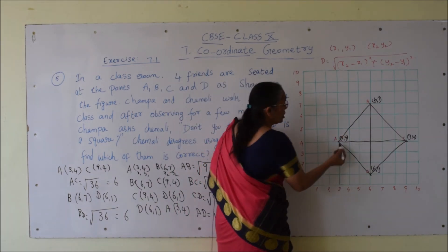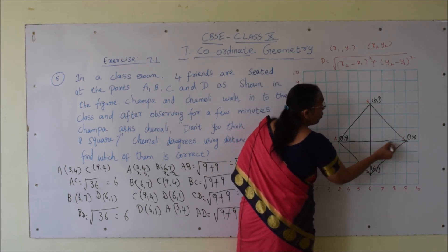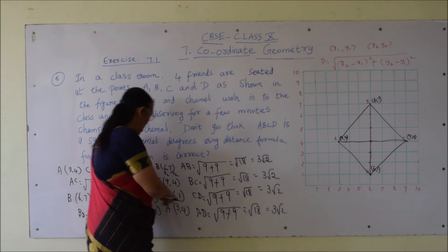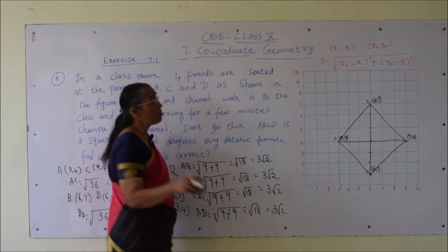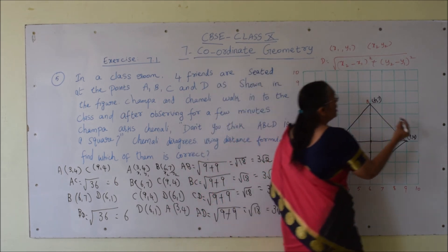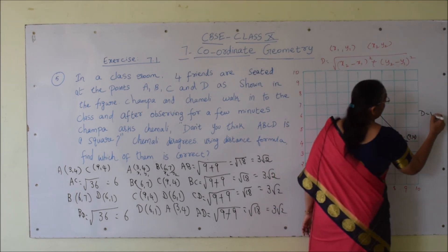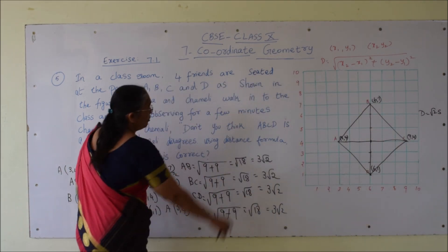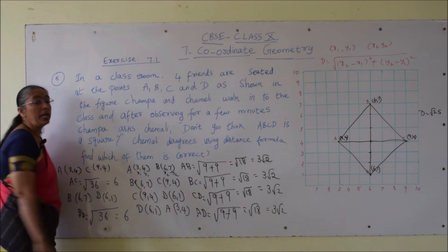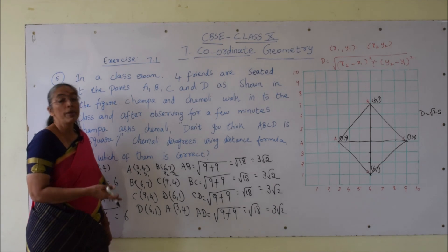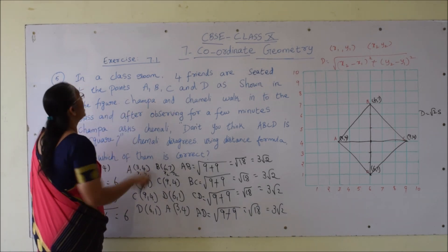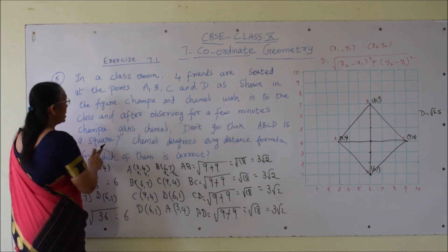We can also verify visually: the distance AC equals BD, both equal 6 units. Note that the diagonal is not equal to the side — the relation between diagonal and side of a square is: diagonal = √2 × side. So diagonal = √2 × 3√2 = √2 × 3√2 = 6, which matches. So we proved all 4 sides are equal and the diagonals are √2 times the side. Therefore ABCD is a square.